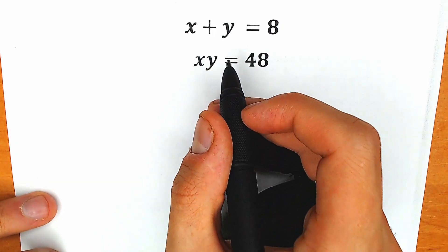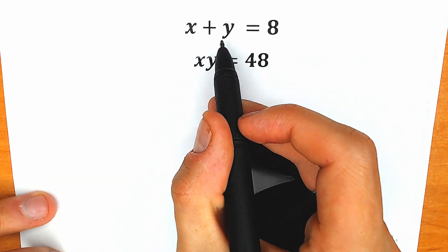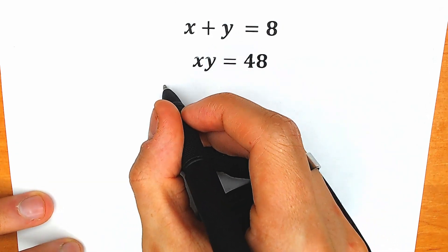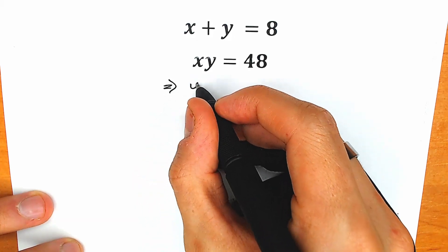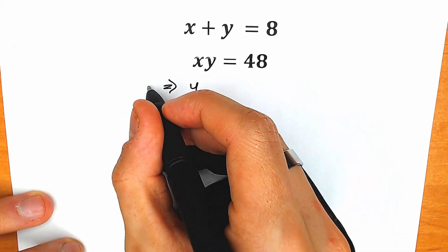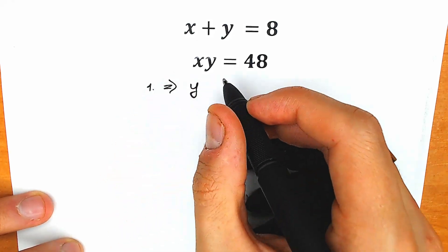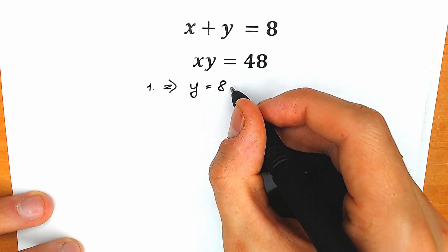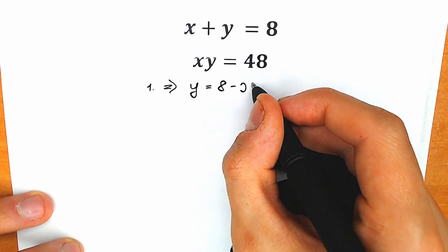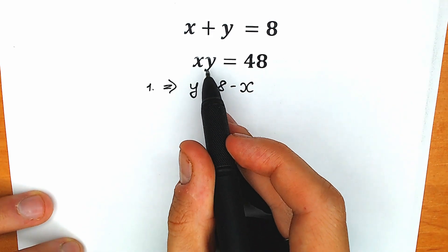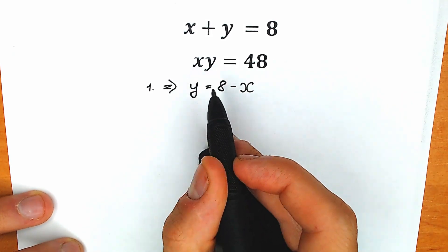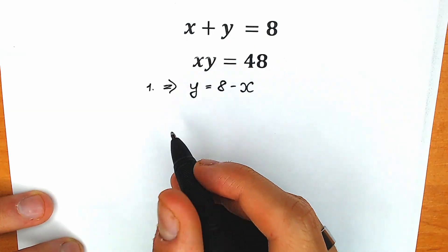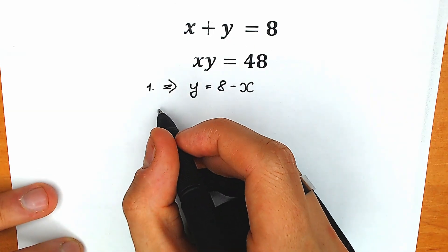So our first step is to express y from the first equation. Let's do it right now. So y from the first equation equals 8 minus x. And right now, instead of this y, let's plug in 8 minus x — let's plug in this expression instead of y into the second equation.